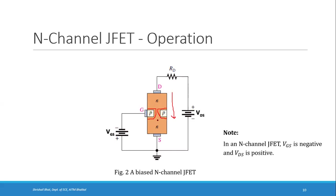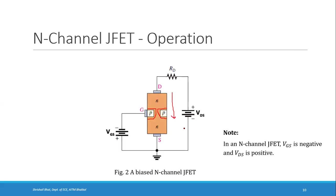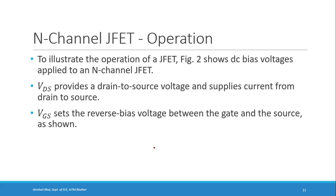Because of the depletion region, the width of the channel decreases, and if the channel width decreases the drain current ID also decreases. By changing the value of VGS, you can change the width of the channel, thereby changing the resistance of the channel and controlling the current flowing through it. VDS provides the drain-to-source voltage and supplies drain current; VGS sets the reverse bias voltage between the gate and source.